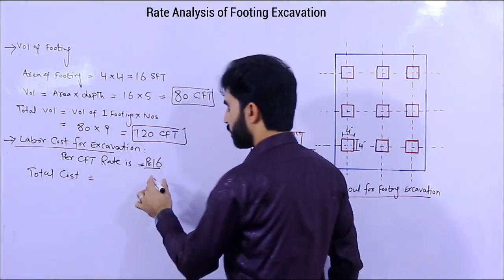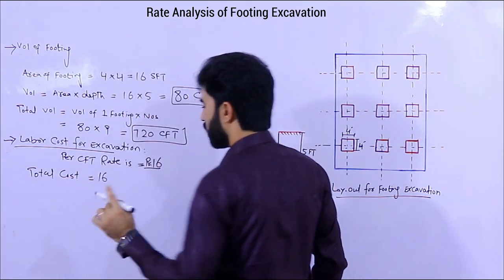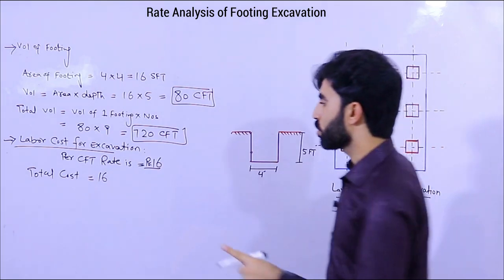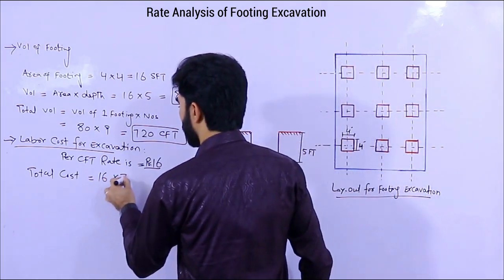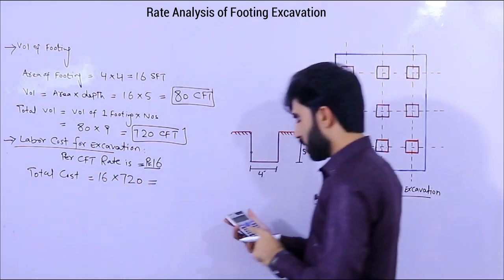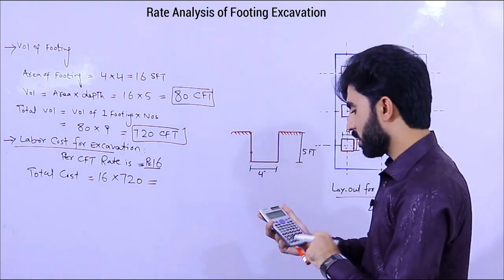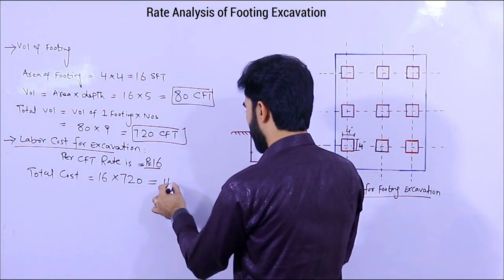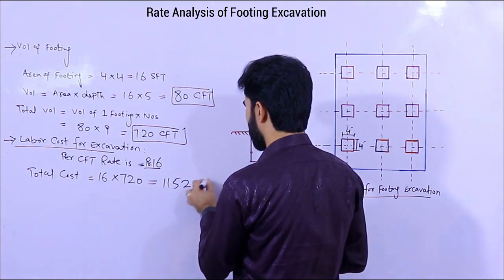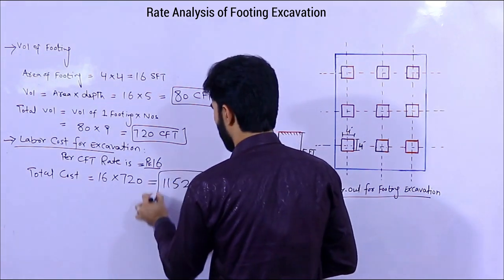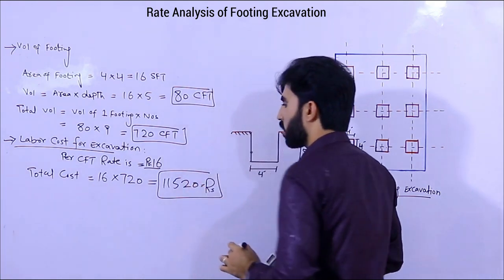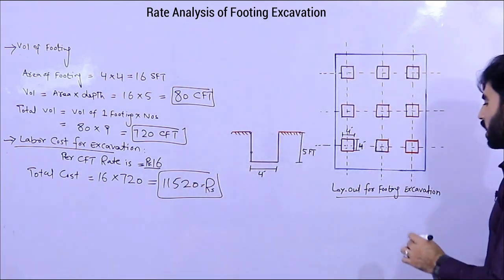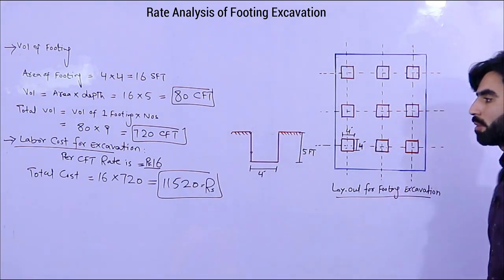So total cost will be 16, the cost per square feet, multiply 720. So 720 multiply 16 equals 11,520 rupees. This is the cost of footing excavation by labor.